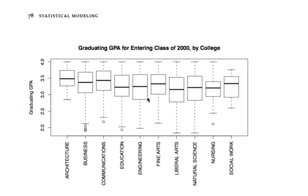From this box plot, we see a noticeable trend in which graduating GPA is correlated with the college in which a student is taking his or her degree. Architecture, for example, tends to have higher average graduating GPAs than education, engineering, or nursing. While there is still a large amount of within-group variation, there are some systematic differences among the colleges.